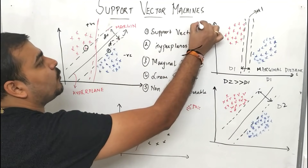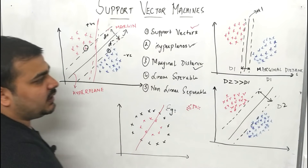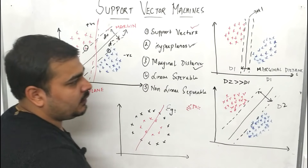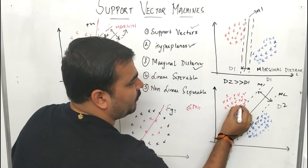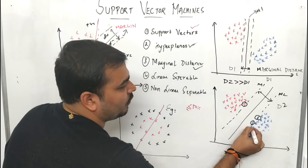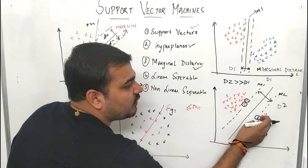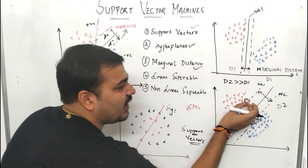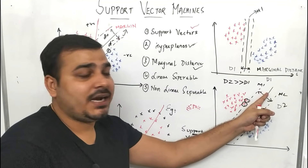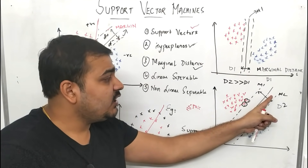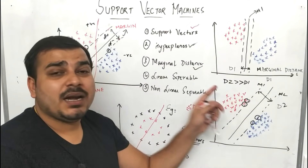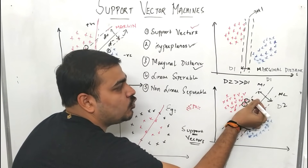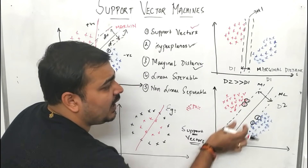One important concept is support vectors. We have created the hyperplane and selected the maximum marginal distance. Now, the nearest positive point passing through marginal plane M1 and the nearest negative point passing through marginal plane M2 — there may be multiple such points — these are called support vectors. Support vectors are the points that pass through the marginal planes created parallel to the main hyperplane. There may be multiple points — any number passing through the marginal plane are considered support vectors.